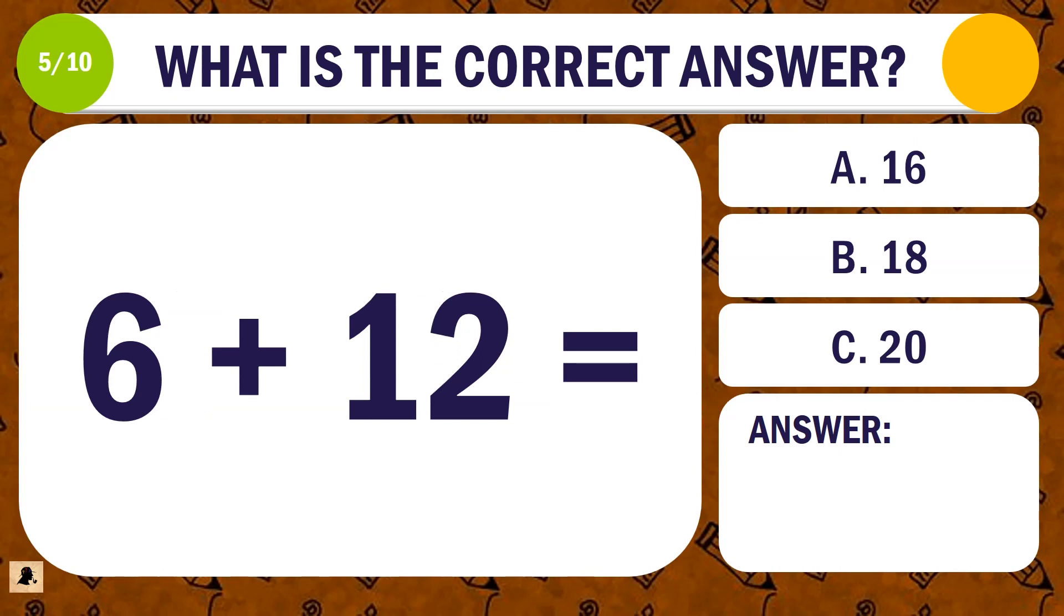Question 5. What is the correct answer for 6 plus 12? A. 16. B. 18. Or C. 20.